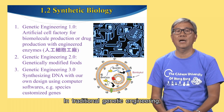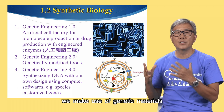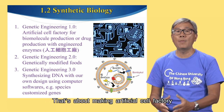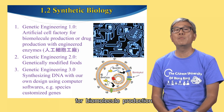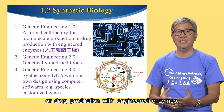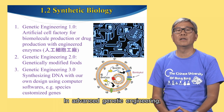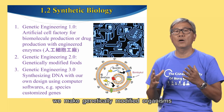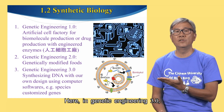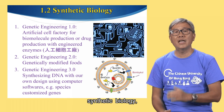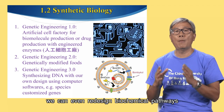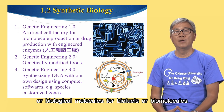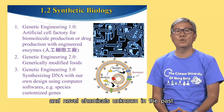In traditional genetic engineering, we make use of genetic materials to produce useful biological molecules, such as insulin and growth hormone — making artificial cell factories for biomolecule production, drug production, with engineered enzymes. In advanced genetic engineering, or genetic engineering 2.0, we make genetically modified organisms for food production. Here, in genetic engineering 3.0 — synthetic biology — we can even redesign biochemical pathways to produce antibiotics, biological molecules for biofields, or novel chemicals unknown in the past.